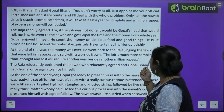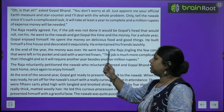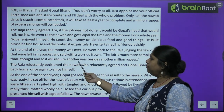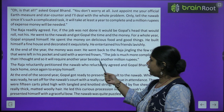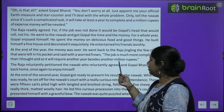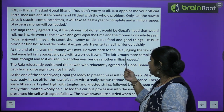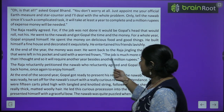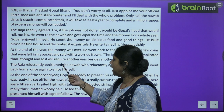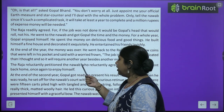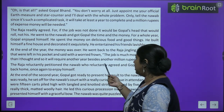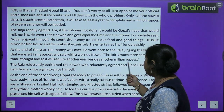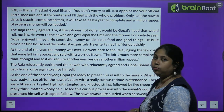At the end of the year, Gopal went back to the Raja, jingling the few coins left in his pocket, and said with a worried frown, 'The job is much more complicated than I thought. It will require another year, besides another million rupees.'